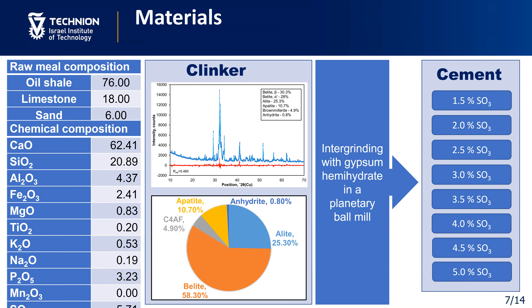The materials used in this research were oil shale, limestone, and sand for clinker production, and gypsum hydrate for cement preparation. Oil shale 76%, limestone 18%, and sand 6% were mixed together. Pellets were formed with water, dried in the oven at 105°C, and then burned at a high temperature of 1,250°C. After that, the clinker was ground in a mill and analyzed by XRD.